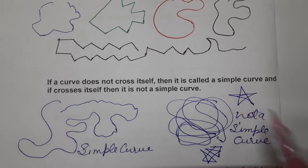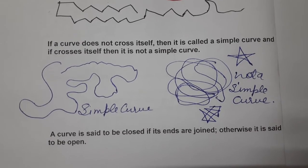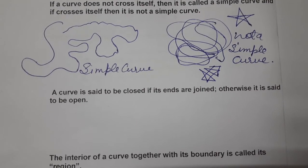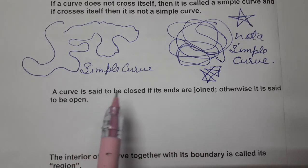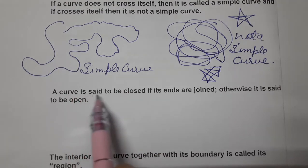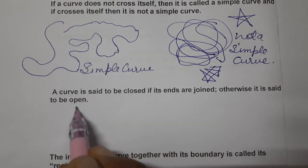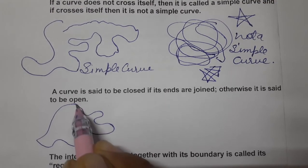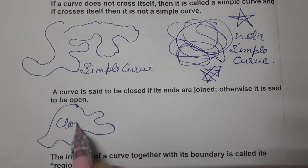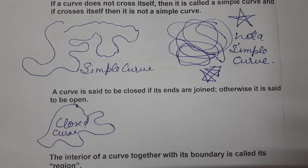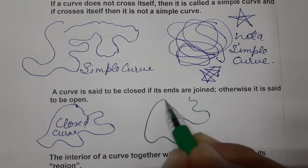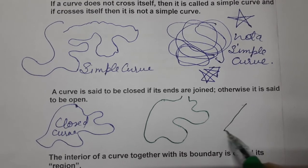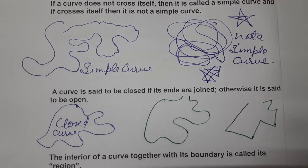A curve is said to be closed if its ends are joined; otherwise it is said to be open. So this is an open curve — ends are not joined. Let's make one curve whose ends are joined — so it is a closed curve. If ends are not joined, then it is called an open curve. This is open, and this is open.